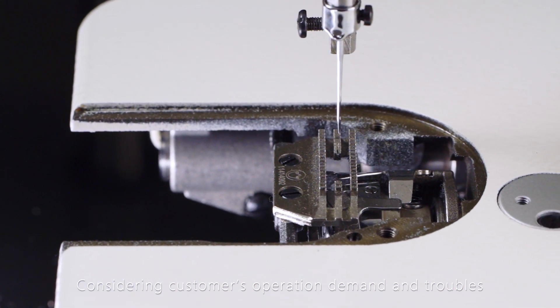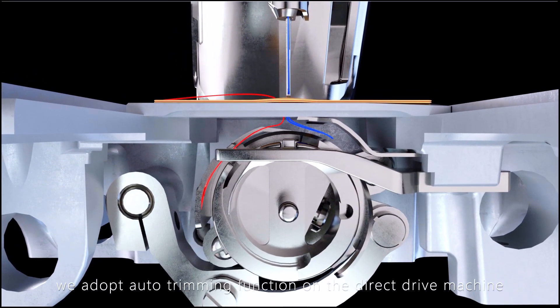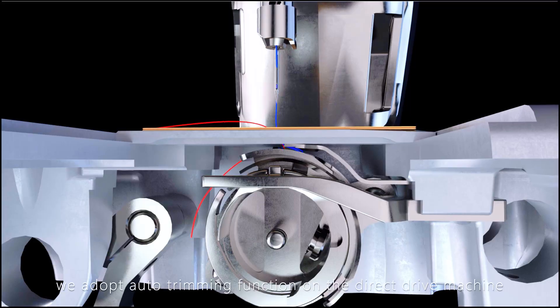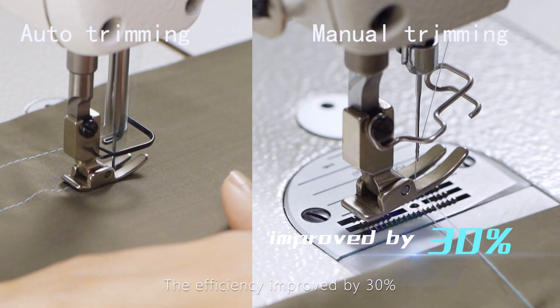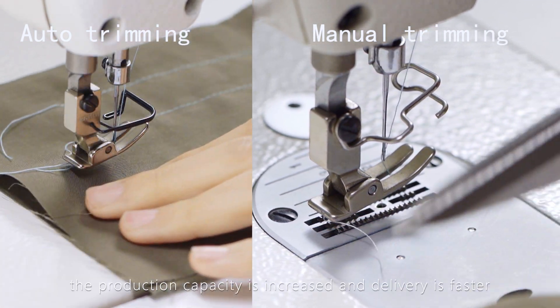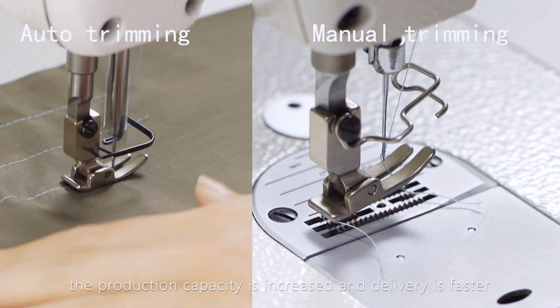Considering customers' operation demand and troubles, we adopt auto trimming function on the direct drive machine. Compared with manual trimming, the efficiency improved by 30%. The production capacity is increased and delivery is faster.